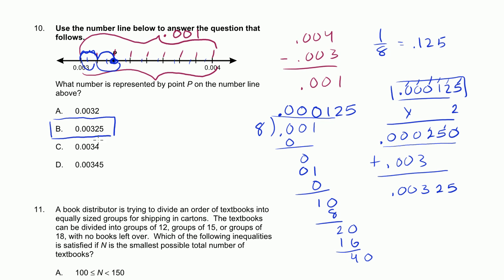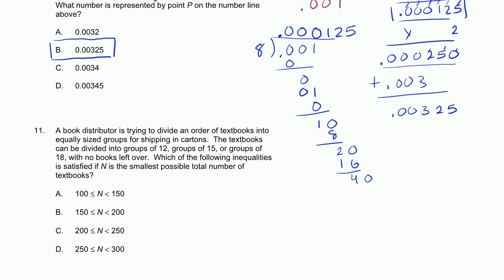Actually, there was a much easier way to think about it. Instead of dividing by 8 and all of that, there are 8 increments and we've gone 2 of them — that's 1/4 of the distance between 0.003 and 0.004. One-fourth of that distance is just another 0.00025. That would have been way easier, especially if you didn't want to waste a lot of time.